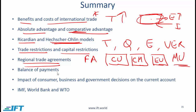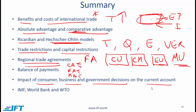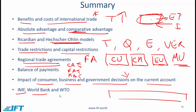For balance of payments, it is critical to recognize the three major components: the current account, the financial account, and the capital account, and then the major sub-components within each. There was one slide where I talked about the impact of consumer, business, and government decisions on the current account — remember that major relationship. If you know that relationship, you should generally be able to answer the sorts of questions that might show up on this topic. And finally, IMF, World Bank, and WTO — know the basics about each of these organizations.